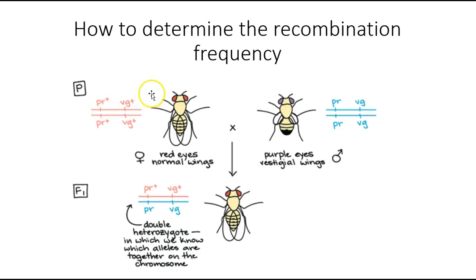We then cross that with a complete recessive, which of course is going to be purple eyes and little vestigial wings. And predictably speaking, like a very simple Punnett square, we're going to get a heterozygote who looks just like the dominant, except what we know about this individual now is it's going to be heterozygote.